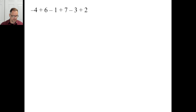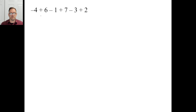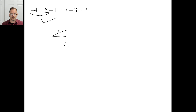Try page 235 practice problems. Let's just go left to right on this one and try to do this mentally. Negative four plus six — opposites — six minus four is two, positive two because this is farther from zero. Two minus one — we know that's going to be a one. One plus seven — we know that's going to be an eight. Then eight minus three is five, and five plus two is seven.